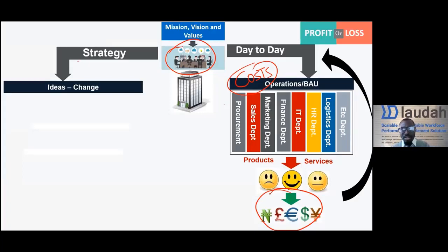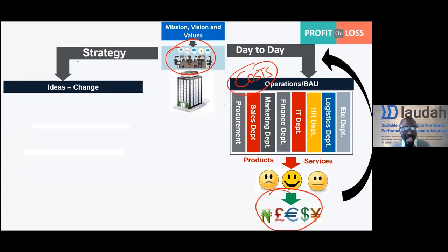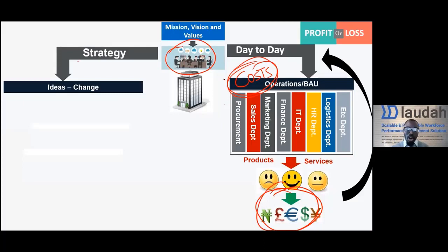You might wonder: does government make profit? Yes, government makes profit by creating more jobs, fixing more roads, building more schools or hospitals — those are the profits governments can declare at the end of the year. Everyone is looking for more money to do good and to reduce the cost of governance, whether in private, public, or NGO organizations.